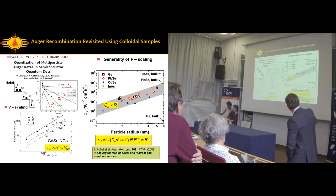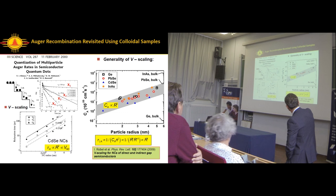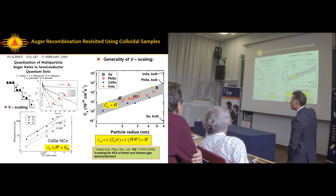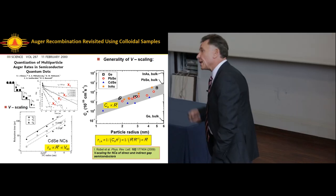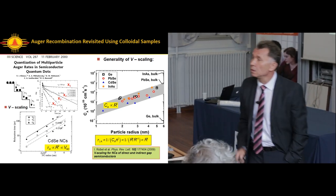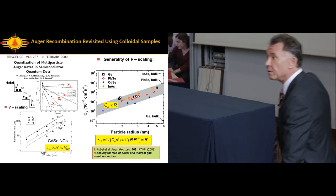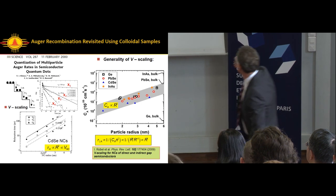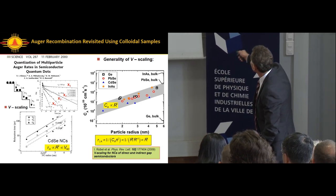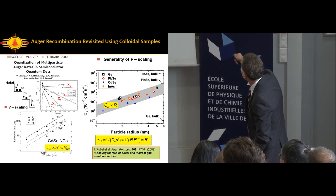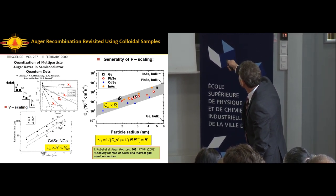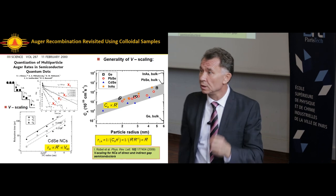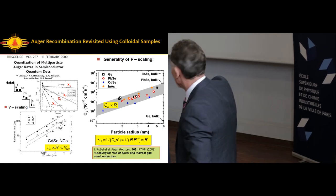This is reported not in the form of lifetime but in the form of the Auger constant as a function of size. A typical value measured - biexciton lifetime can be related to the Auger constant by this simple relationship. Why we did that? Because we knew Auger constants of bulk materials. What's very interesting to see, what happens with the recombination as you go from the bulk to the quantum dot regime?